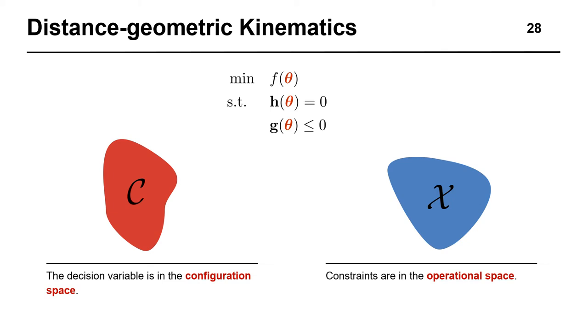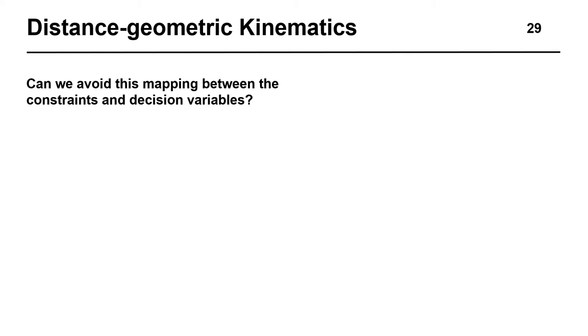As mentioned before, the mapping between these spaces is usually nonlinear. We can then ask whether this mapping can somehow be avoided by defining both the decision variables and constraints in a single space.